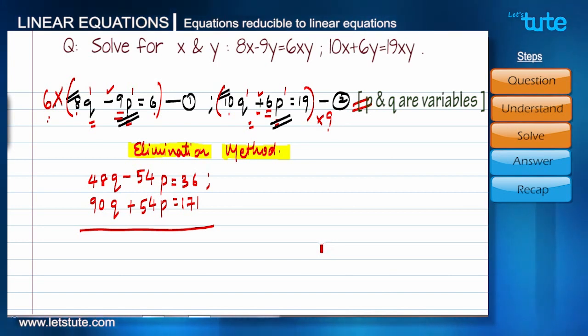That will get us the value for q. After adding, these two terms will get cancelled since it is minus 54p and plus 54p. And q terms are added since they are both positive, it will give us 138q. They are cancelled, so here it will be 0. Here it is equals to, and here we will get 207. After solving we will get q equals 3 by 2.